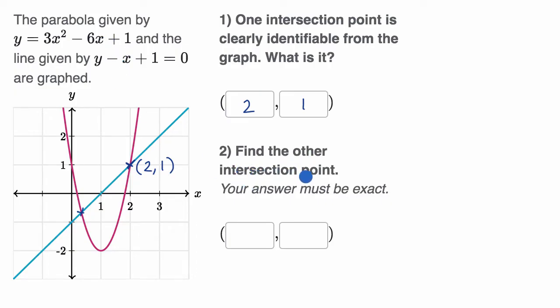The other one is find the other intersection point. Your answer must be exact. So they want us to figure out this intersection point right over here. To do that, we're going to have to solve this system of equations. This is interesting because one of the equations is not linear, it is a quadratic.